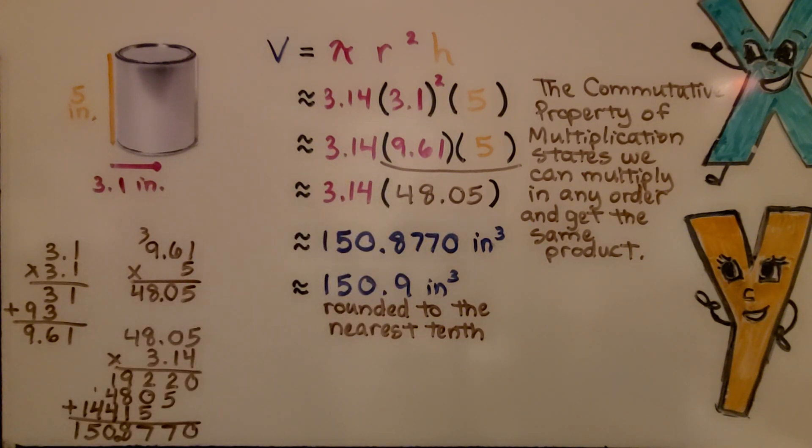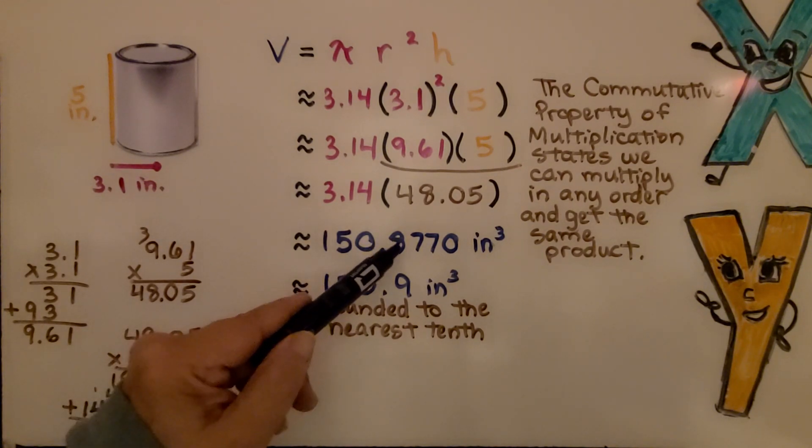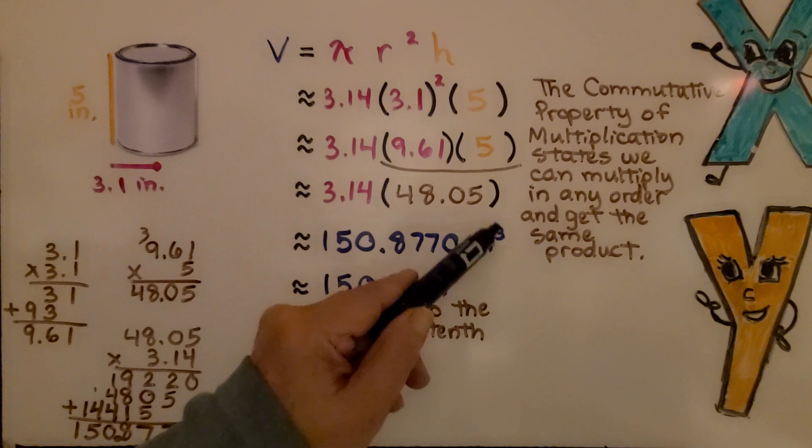Then we can multiply it by the 3.14 and get 150.8770 inches cubed.